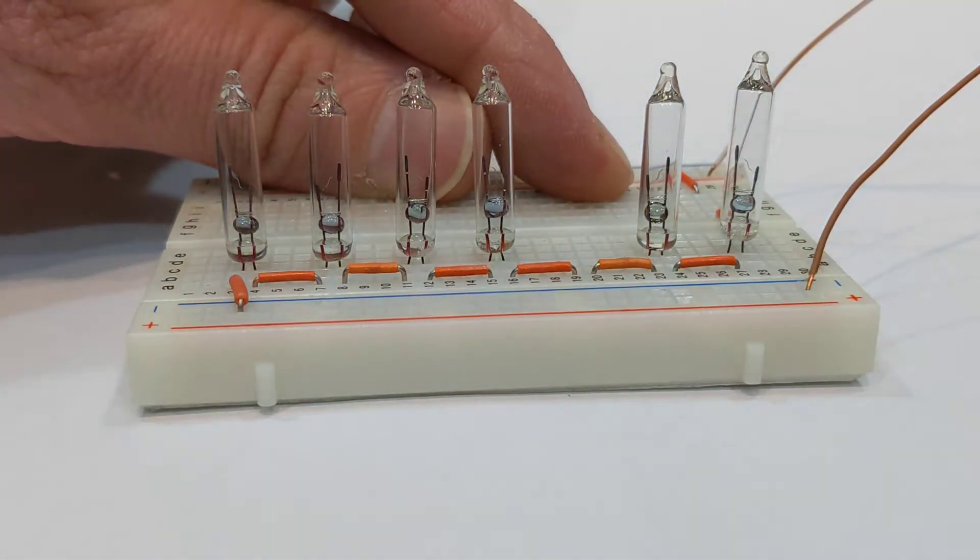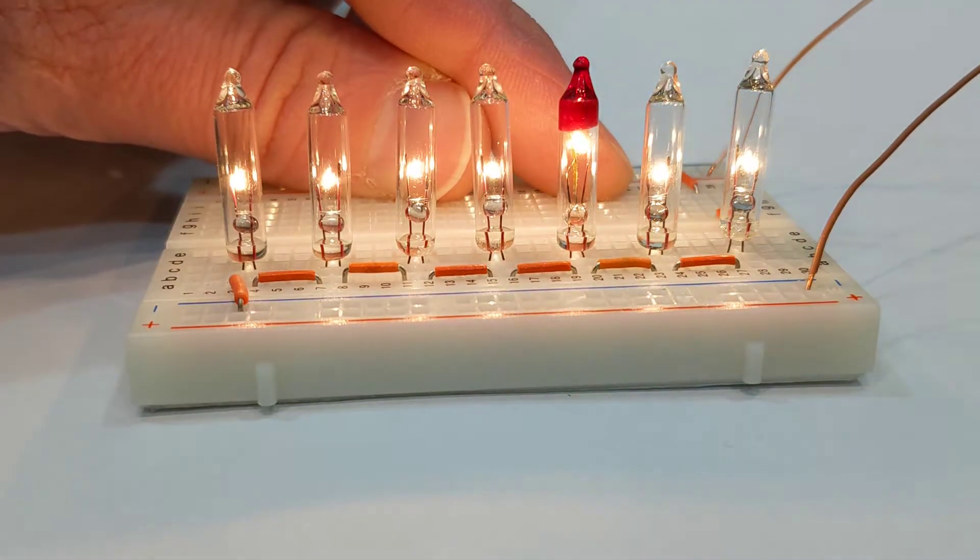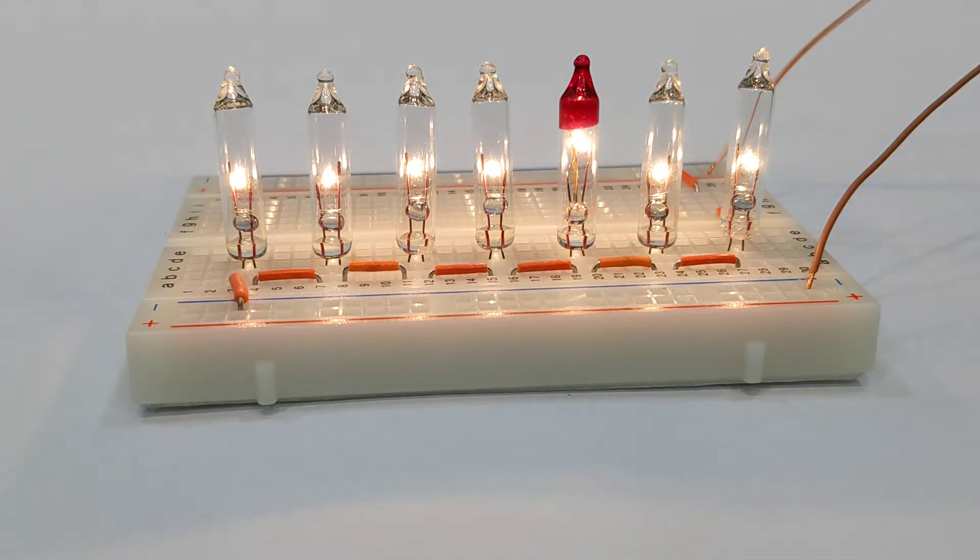At this point we're going to replace one of the bulbs. It doesn't matter which one. We're going to replace one of the bulbs with a red tip bulb and you'll see that blinks the entire string.